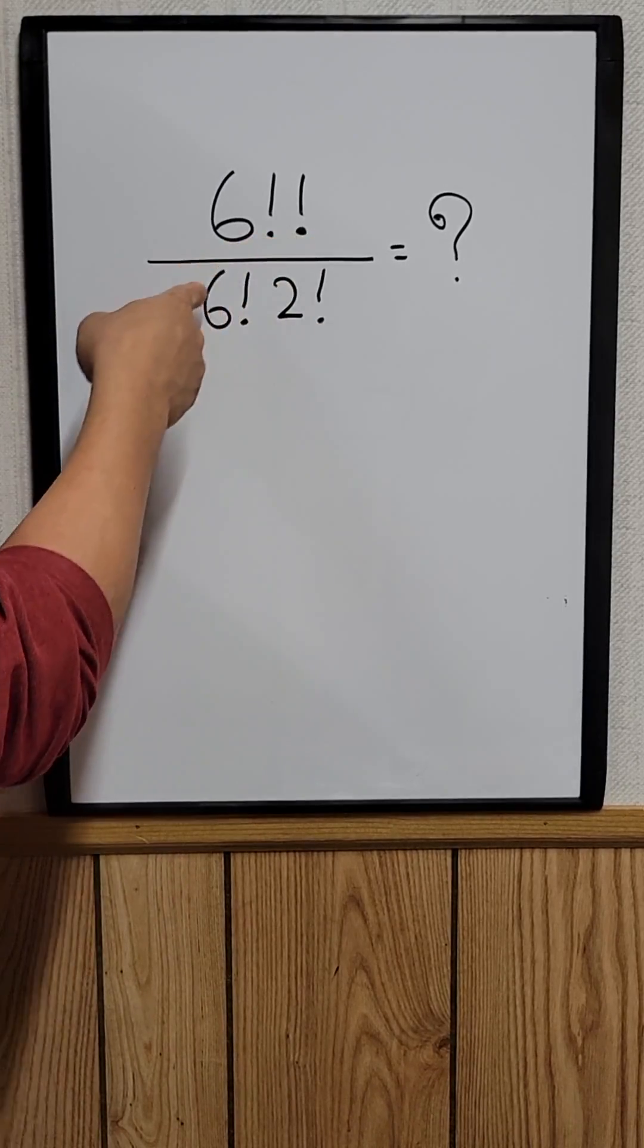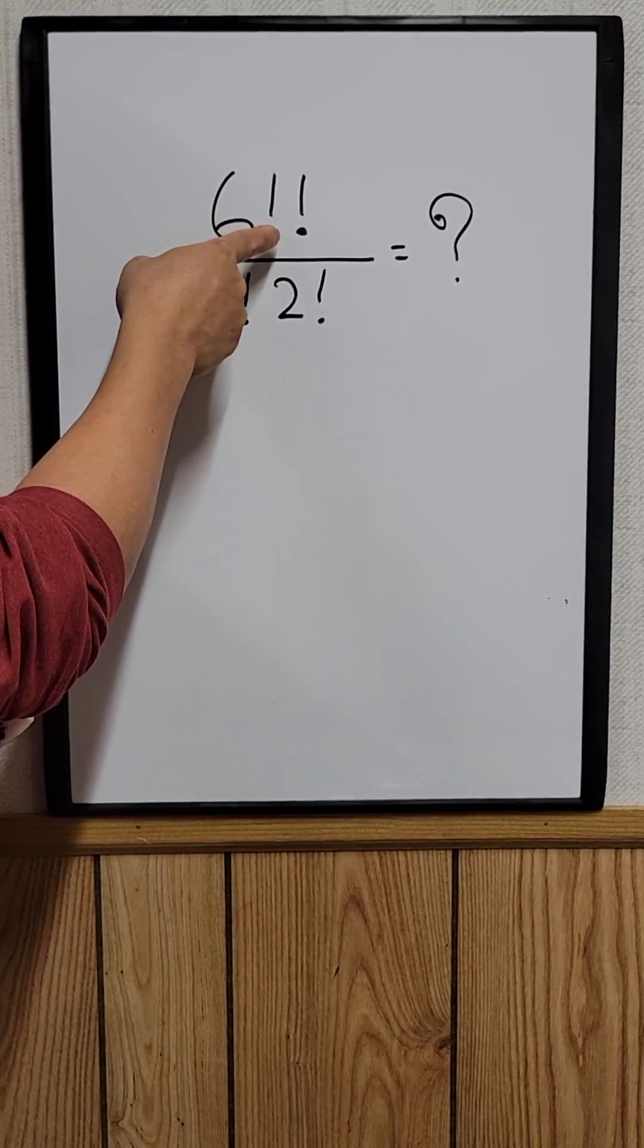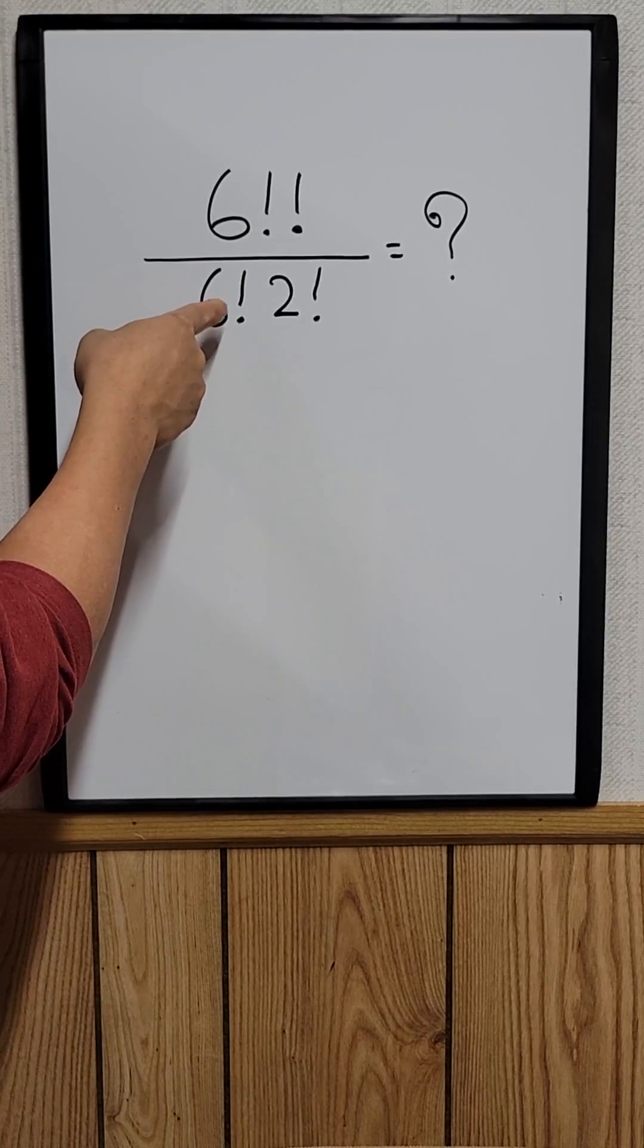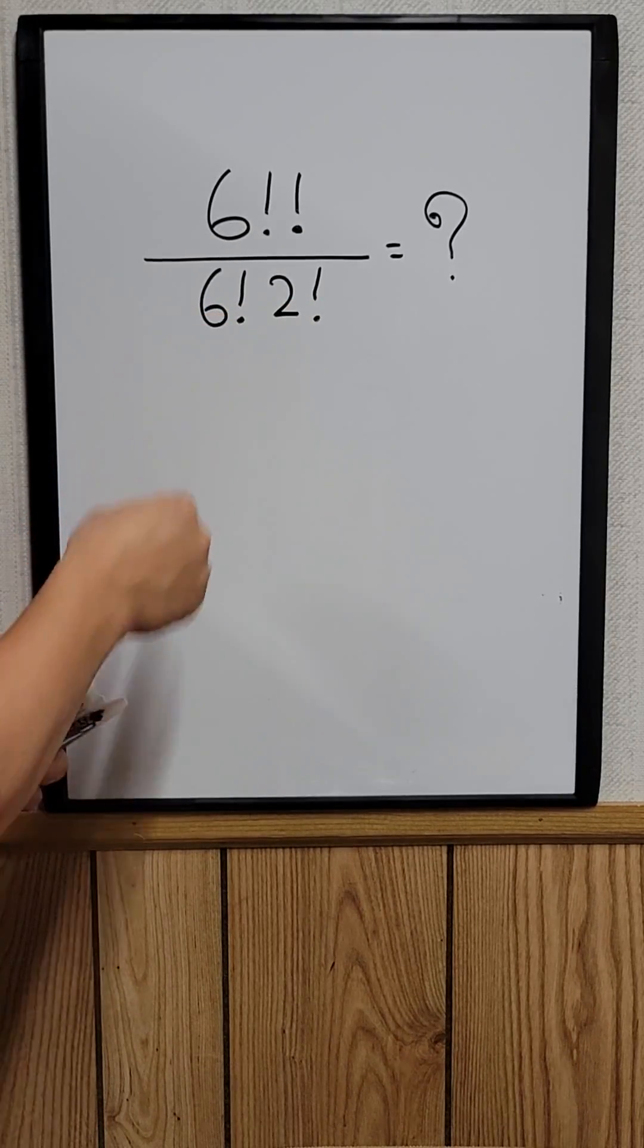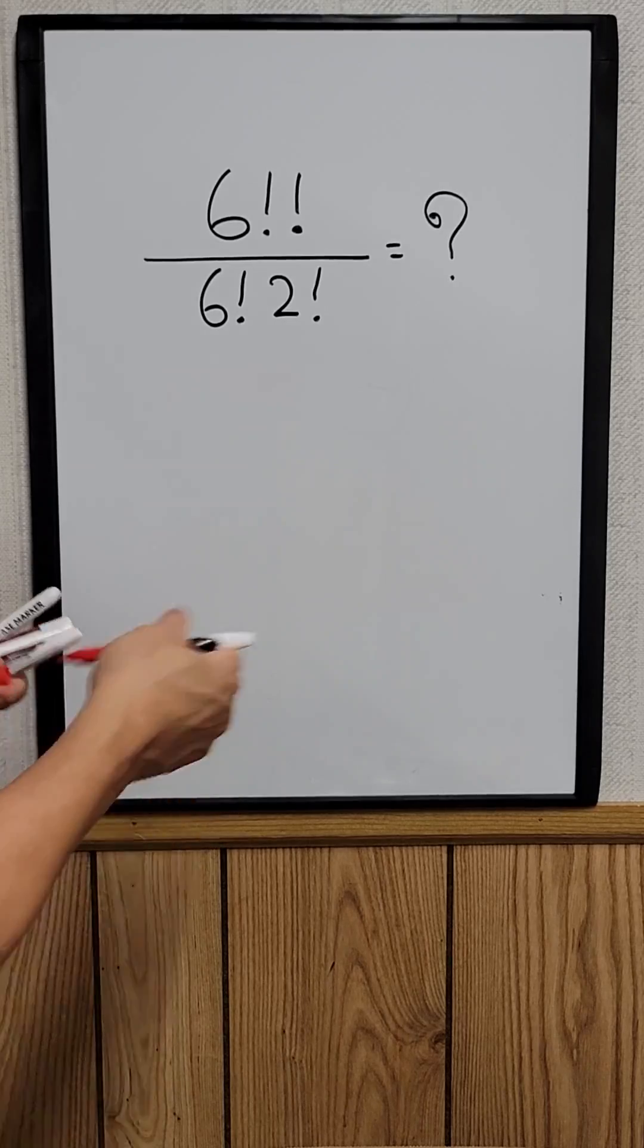Let me show you how to solve this: six double factorial divided by six factorial times two factorial.